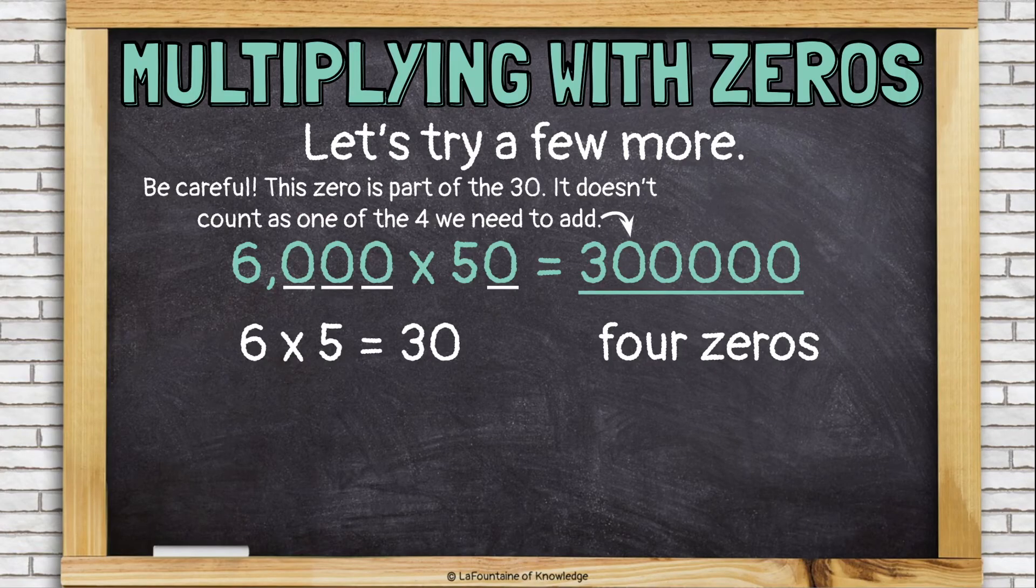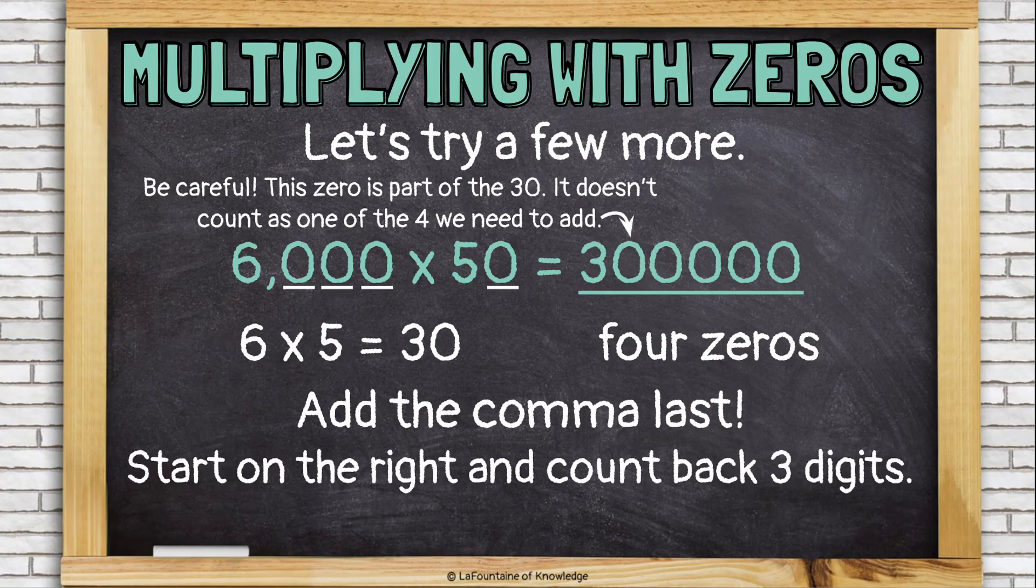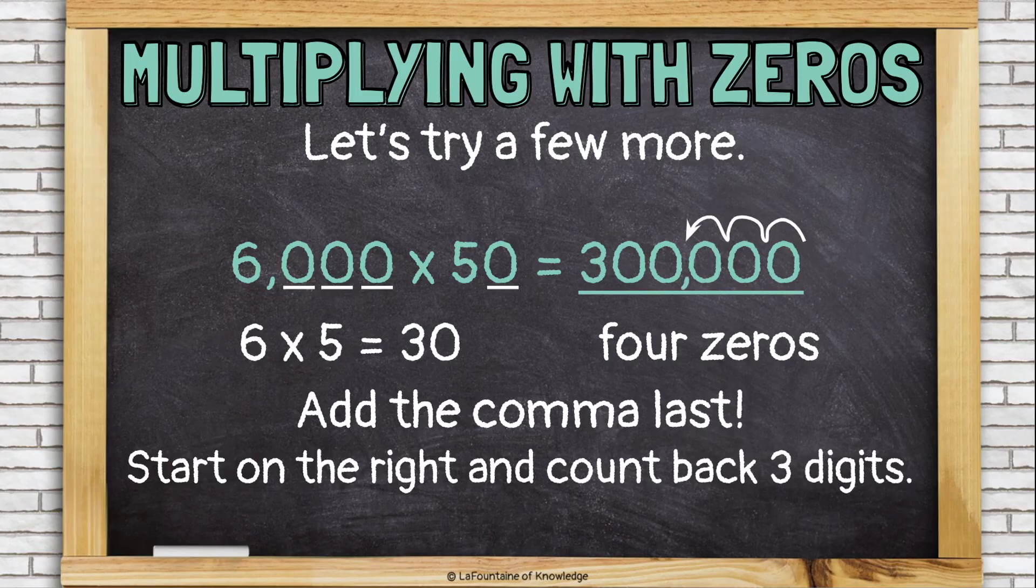Be really careful here. This zero is part of the 30. It doesn't count as one of the four we needed to add. So we had 30, and then we put four more zeros after the 30. And then finally, add the comma. We'll count back three digits and put it there.